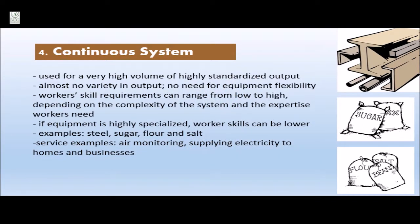The next process type is called a continuous system, used for a very high volume of highly standardized output. It has almost no variety in output, meaning there is no need for equipment flexibility. Worker skill requirements can range from low to high depending on the complexity of the system. Generally, if equipment is highly specialized, workers' skills can be lower. Examples of products include steel, sugar, flour, and salt. Continuous services include air monitoring and supplying electricity to homes and businesses.